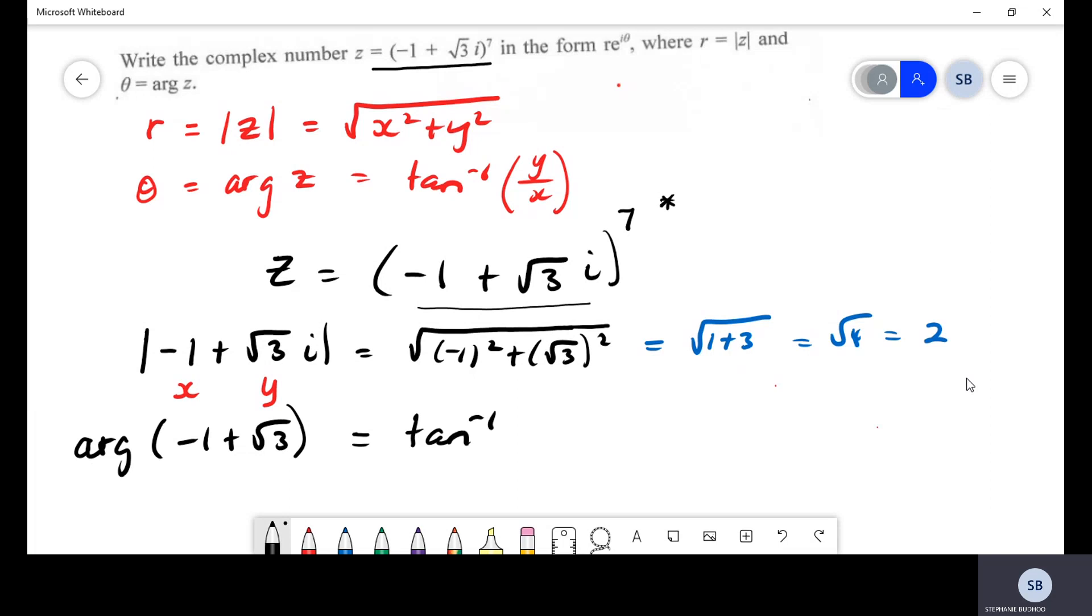The argument of what's contained in brackets will simply be equal to tan inverse of y on x. Recalling y has a value of √3 and x has a value of -1, we will get tan inverse of √3 on -1, which is -√3. Using your calculator in radian mode, that answer reads to be -π/3.